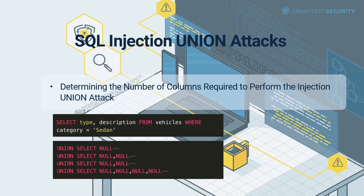SQL injection union attacks are typically aimed at vulnerable applications that use the SELECT statement to filter the data they retrieve. A single attack may involve the attacker triggering altered queries for fetching sensitive data. A successful attack primarily depends on a hacker's masquerading skills while he determines the column-level data returned by the original query. Such an attack aims to discover the compatible data type that can be accepted through the attacker's malicious query.